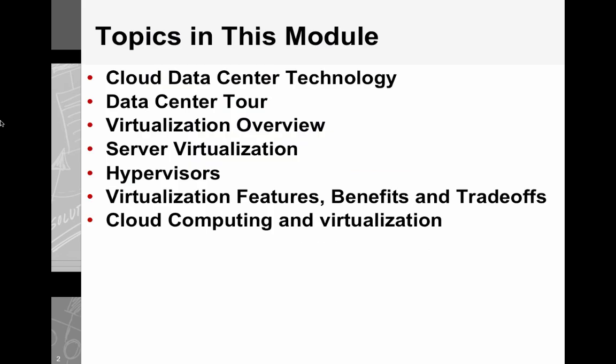What are the topics in this module? We will start with cloud data center technology, where we will look at the various technologies powering the data center from a physical characteristics perspective — for example, the server and rack system, the cabling system, the network system, and the power and cooling system. Then in the data center section, we will look at several small videos that give you a behind-the-scenes look at the operations of a data center.